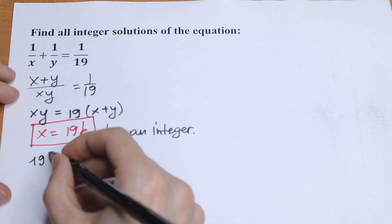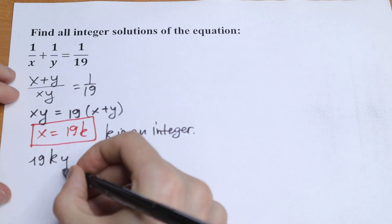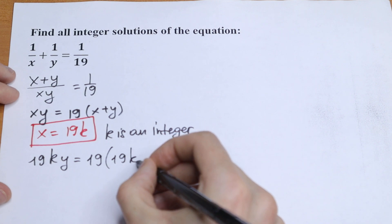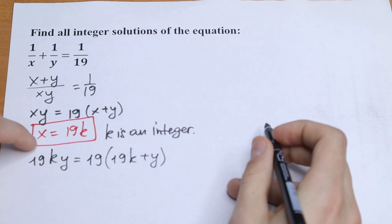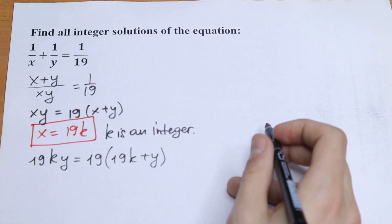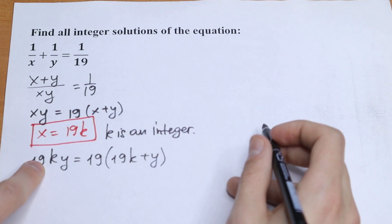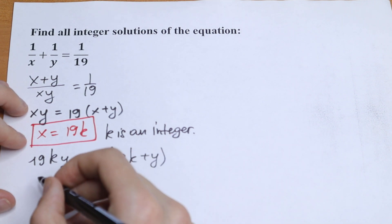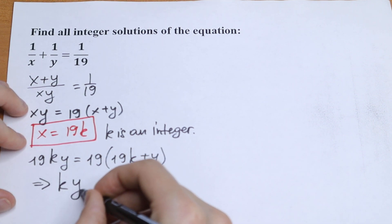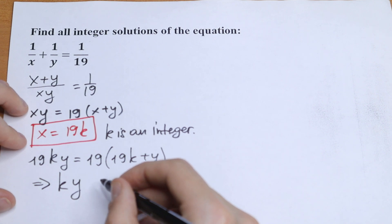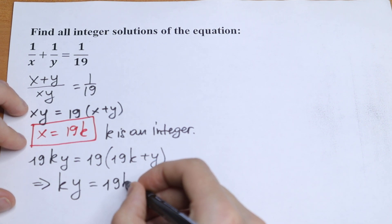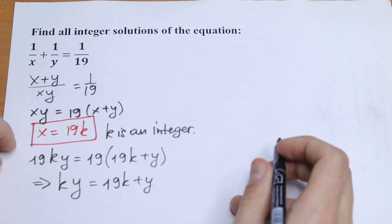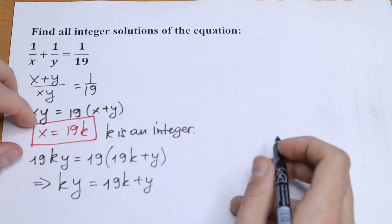So plugging in x = 19k, we get 19k times y equal to 19 times 19k plus y. As you can see, we can cancel the 19 and divide both sides by 19. As a result we will have k times y equal to 19k plus y.